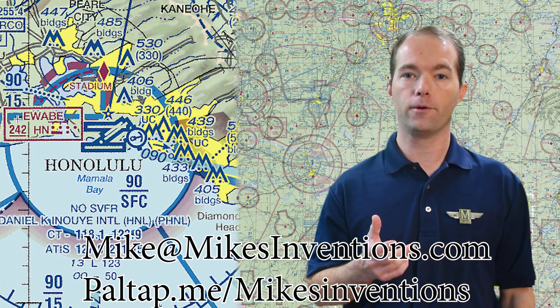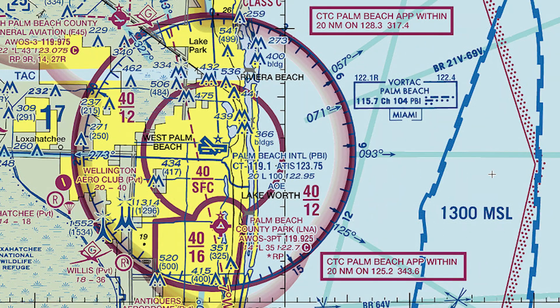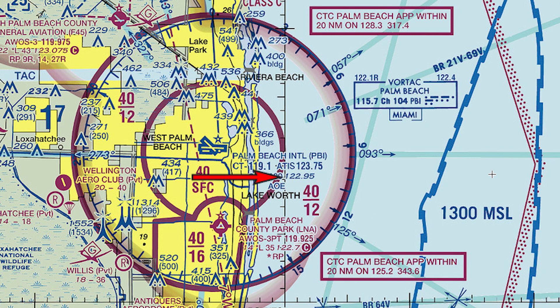Let's look at a couple of airports so you can see what else they tell you. Here at Palm Beach International KPBI, the control tower frequency is 119.1. We can get weather on the ATIS — the automated terminal information service — at 123.75. It's only 20 feet above sea level. This L means the airport is lit from sunset to sunrise. The longest runway is 10,000 feet long. UNICOM — if you need to talk to somebody on the ground about weather briefings or fuel — is on 122.95. And there's a little AOE at the bottom, which means this is an airport of entry with customs and immigration services available on site.